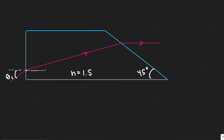In this problem, we're told a block of glass with n equals 1.5, shown in the cross section in the figure, is surrounded by air. A ray of light enters the block at its left-hand face with an incident angle theta 1 and re-emerges into the air from the right-hand face directed parallel to the block's base. Determine theta 1.